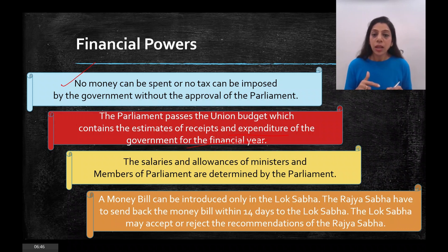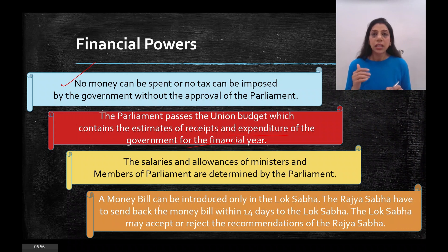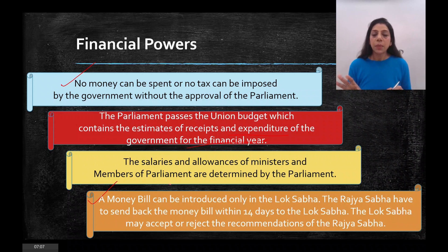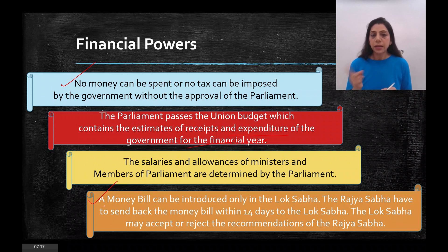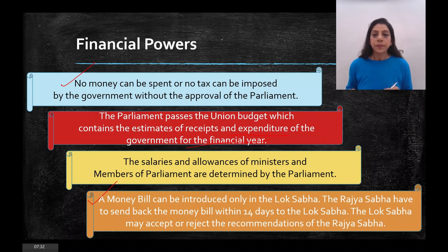The money bill can only be introduced in the Lok Sabha. It does go to the Rajya Sabha, but if Rajya Sabha doesn't send it back within 14 days, it is considered passed. The Lok Sabha has the power to either accept or reject recommendations of Rajya Sabha. This is also a financial power of Parliament, and it is what makes Lok Sabha more powerful than the Rajya Sabha.